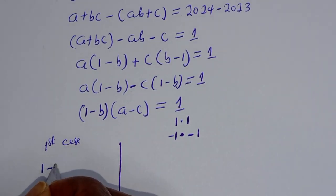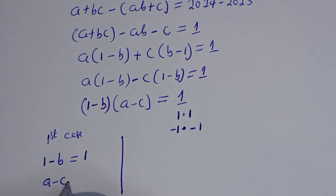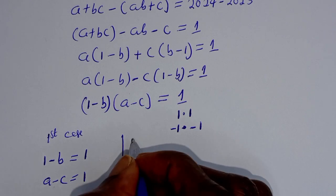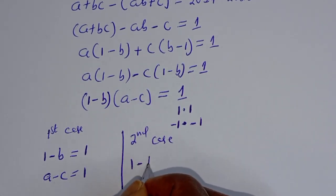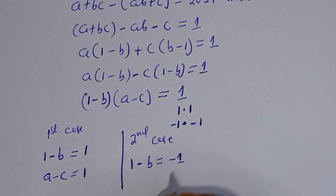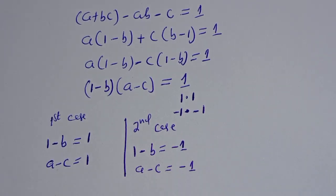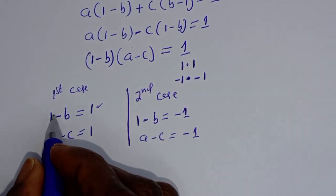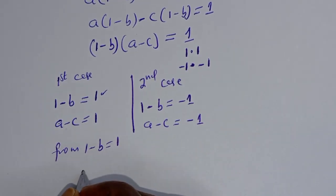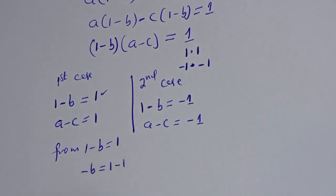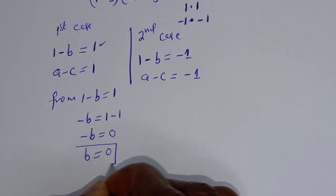The first case: (1 - b) = 1 and (a - c) = 1. From 1 - b = 1, we get b = 0. This is the value of b.